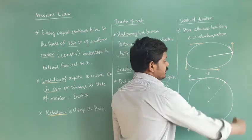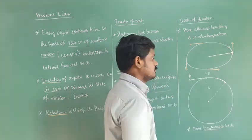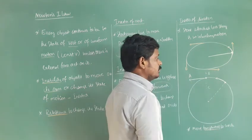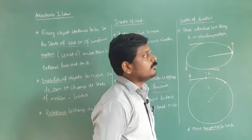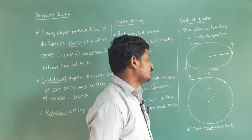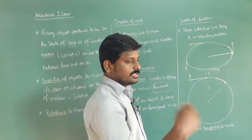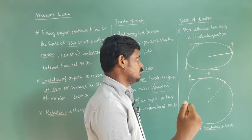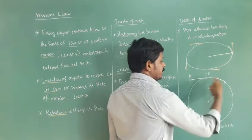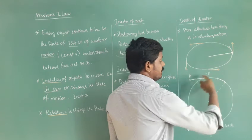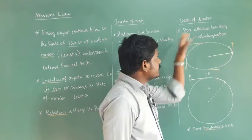For example, if the stone is moving in a circle and at a certain point we release the string, it moves tangentially from that point. A force must act on the object to change its direction. We rotate the stone by applying a constant force through the string — that is what keeps it in circular motion. When we release, the stone moves tangentially. This is inertia of direction: the inability of an object to change its state of direction on its own.